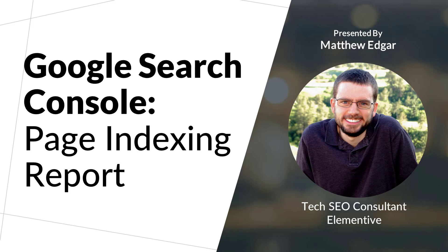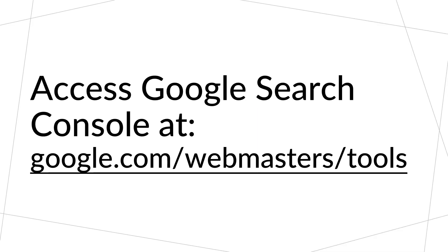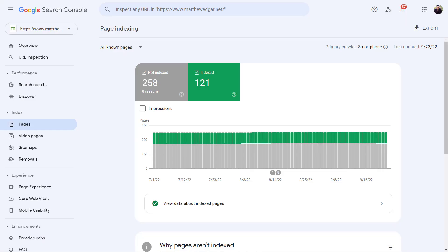One of the best tools available to understand how your website is being indexed by Google is Google Search Console's Page Indexing Report. To access this report, open your website in Google Search Console. In the sidebar, click on Pages, which is located under Index.